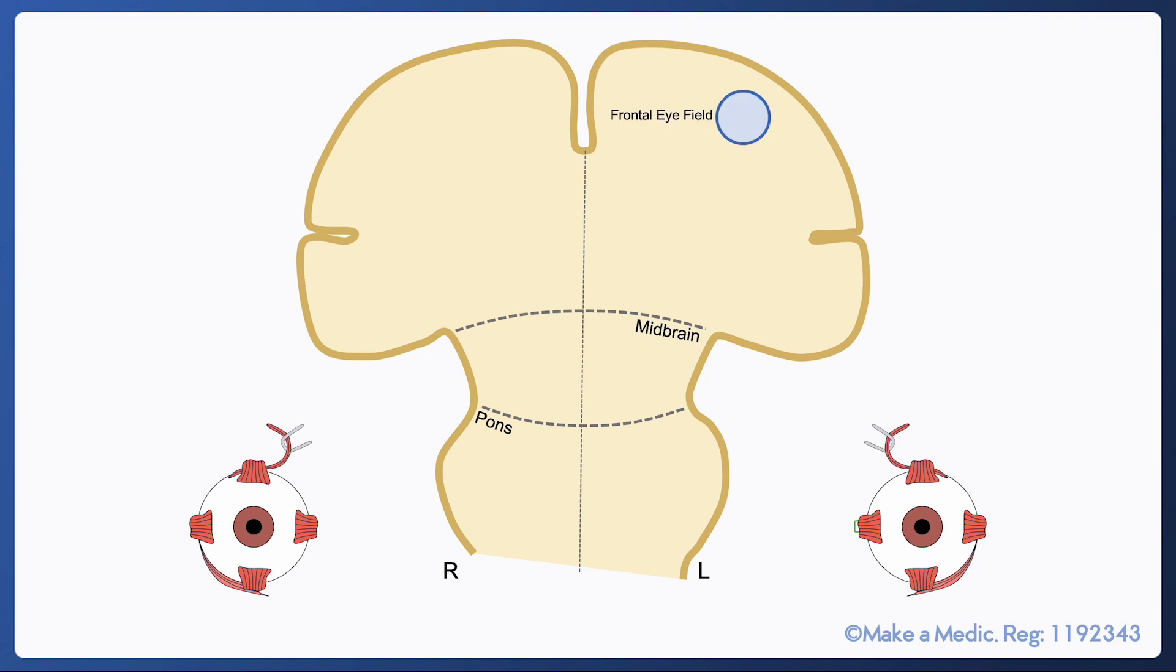This projects down to a control center known as the paramedian pontine reticular formation within the contralateral pons. From here there are projections going to the abducens nucleus from which the abducens nerve emerges and innervates the lateral rectus on the right side.